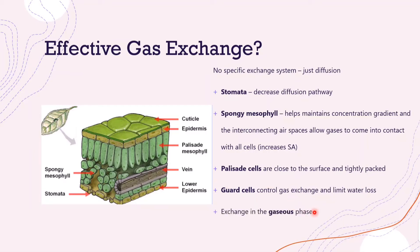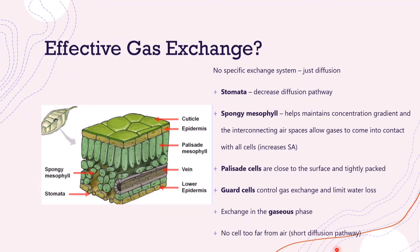We also have to note that this exchange is in the gaseous phase, and gases diffuse faster than liquids, so this makes for effective exchange. Also, the leaf is very thin, so no cell is too far from the air, which adds to the short diffusion pathway.